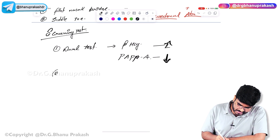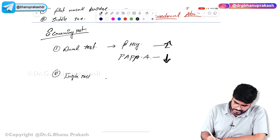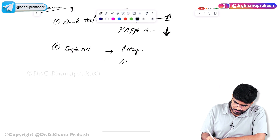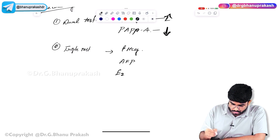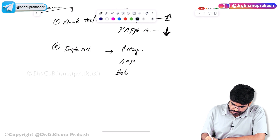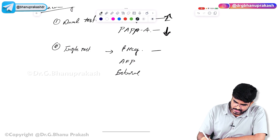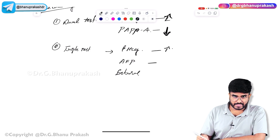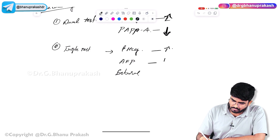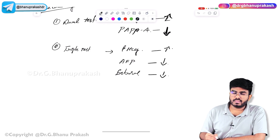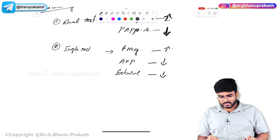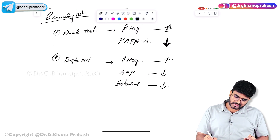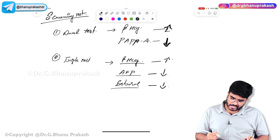The second is the triple test, which checks beta-HCG, alpha-fetoprotein, and estriol. Beta-HCG is elevated; alpha-fetoprotein and estriol levels both go down.